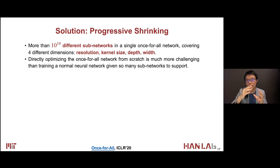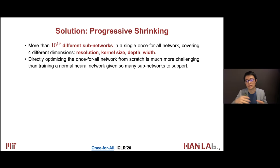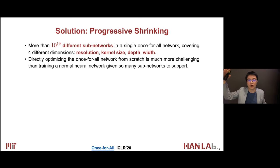The high-level intuition is we want to first support the large model and then support the small model. In this broad spectrum, our approach can cover 10^19 different subnetworks in a single once-for-all network. To achieve that, we cover four different dimensions: different resolution, different kernel size, different depth, and different width. Directly optimizing such an once-for-all network from scratch is much more challenging than training a normal neural network given so many subnetworks to support. We find that training the large model first and then gradually making the model smaller is better, because during SGD — a convex optimization method dealing with highly non-convex problems — redundancy is preferred during initial training dynamics.